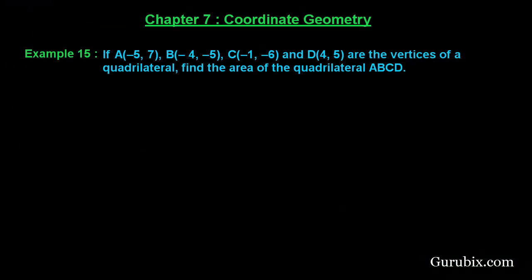Welcome friends. Let us solve example number 15 of chapter 7. The example says: if A(-5, 7), B(-4, -5), C(-1, -6), and D(4, 5) are the vertices of a quadrilateral, find the area of the quadrilateral ABCD. So let us draw a rough sketch of the quadrilateral.